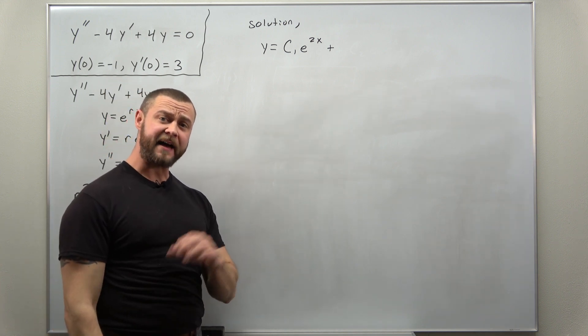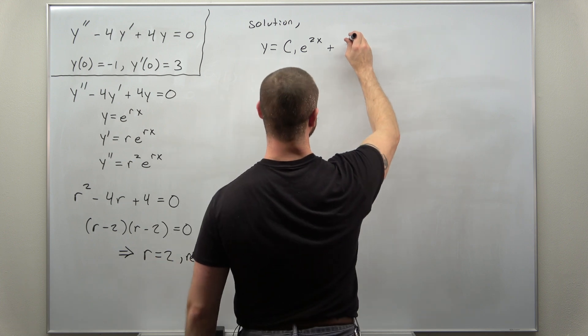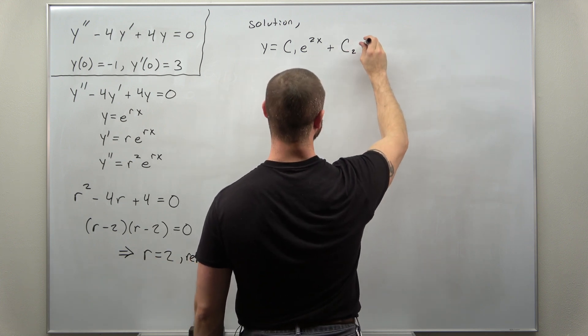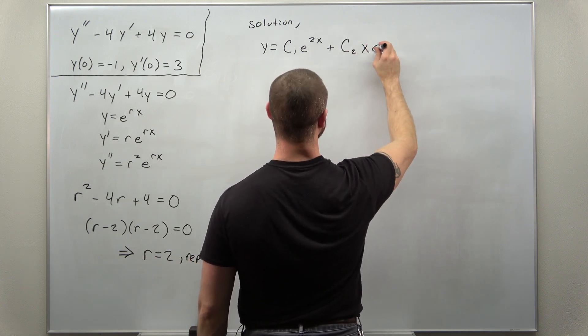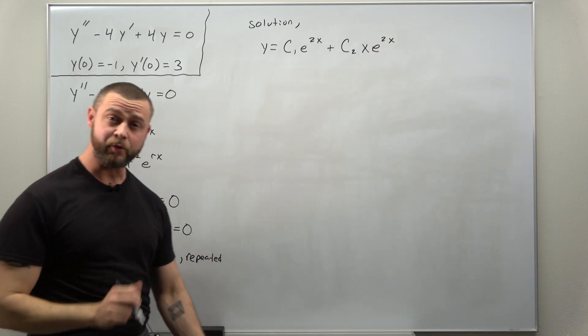But for our second linearly independent solution we have an additional factor of x times the exponential function. So the rest of the solution looks like c2 times x times e to the 2x.